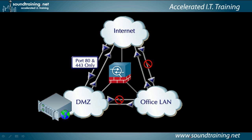What is a DMZ? A DMZ is simply a way of protecting a host or hosts behind a firewall while still allowing a limited level of access from the public internet. In the diagram, you can see there's a web server in the DMZ. We poke a hole through the firewall to allow port 80 and 443 traffic to be initiated from the internet coming into the DMZ.